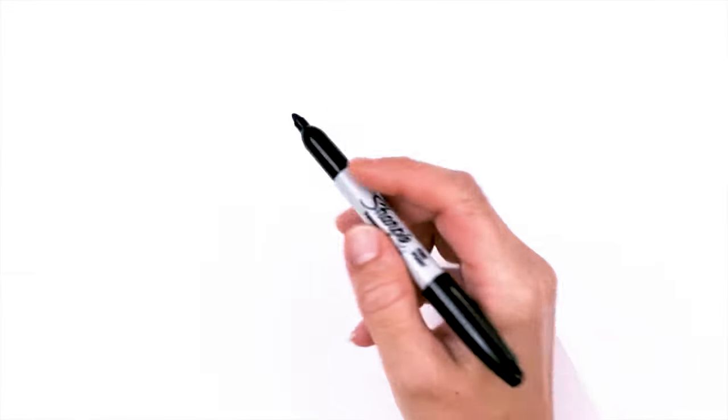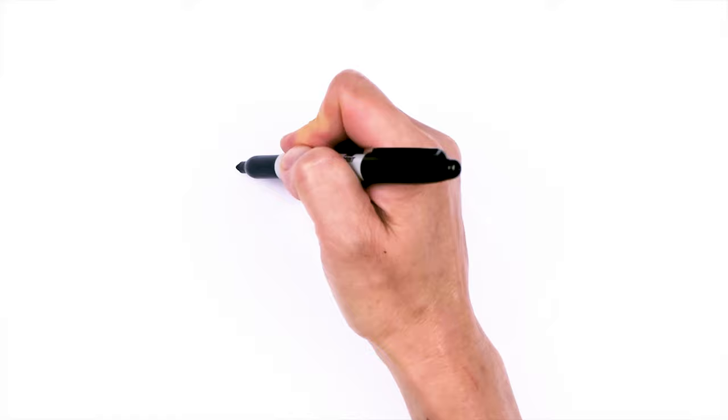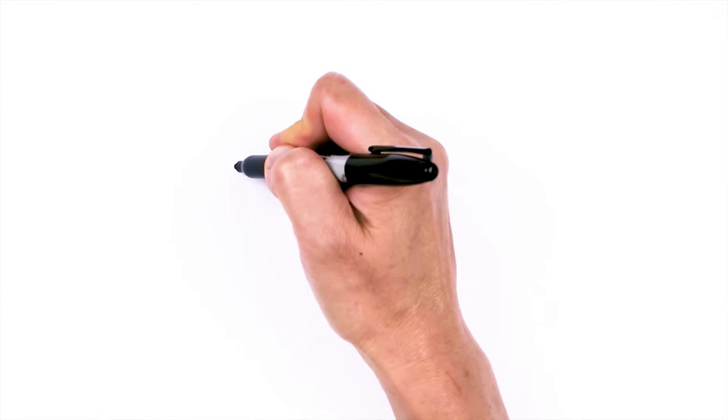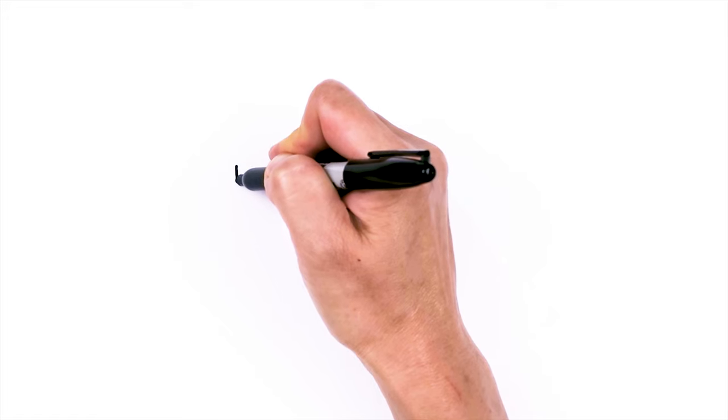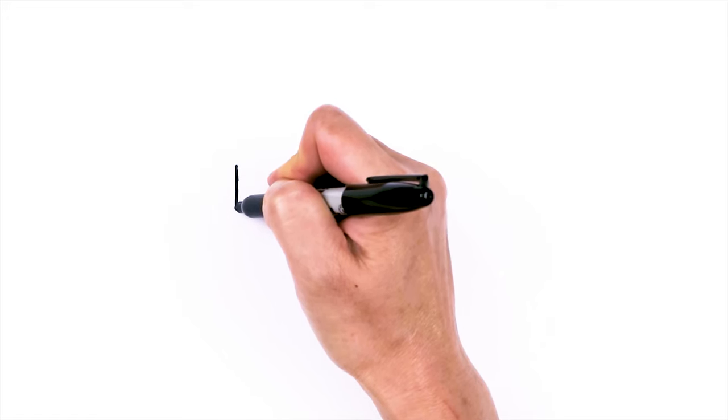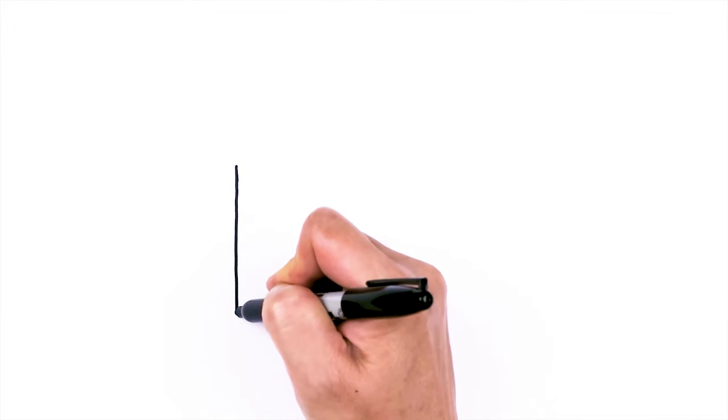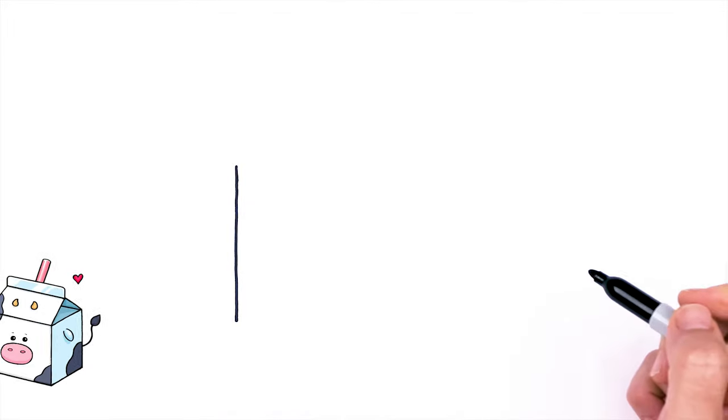To draw this cute carton of milk, let's first start by drawing a straight line down. I'm going to come right here and give myself a point. This is going to be basically the height of my carton. I'm going to bring this down, say about right here, and stop.